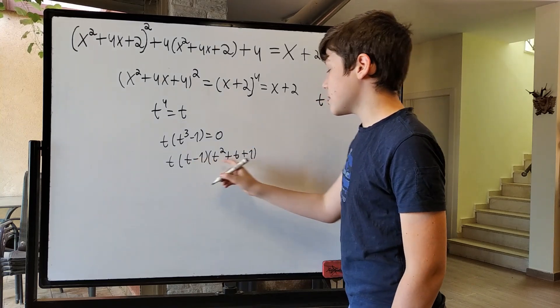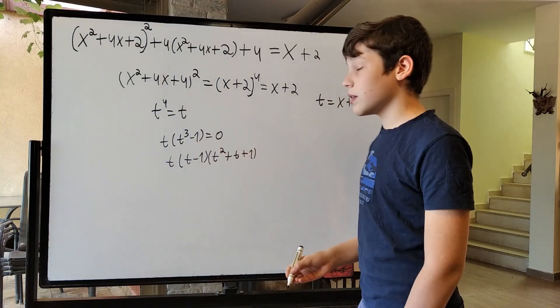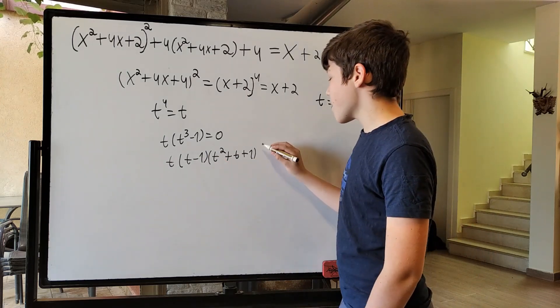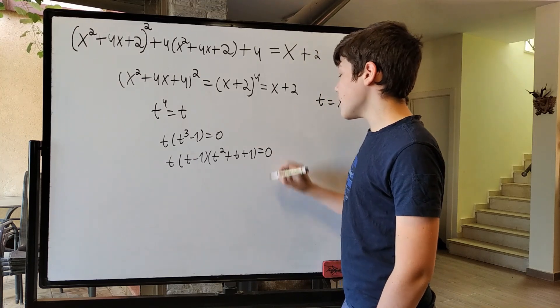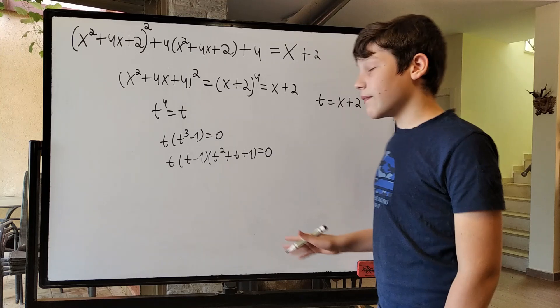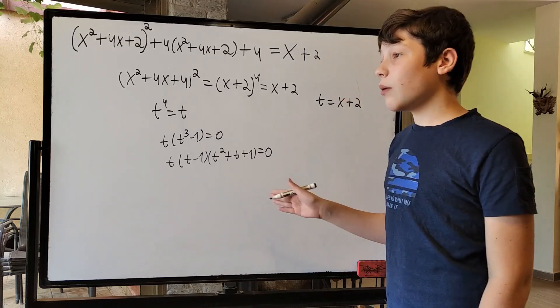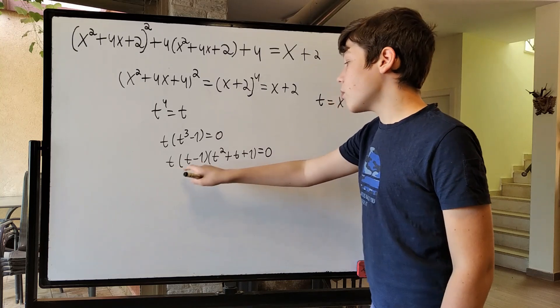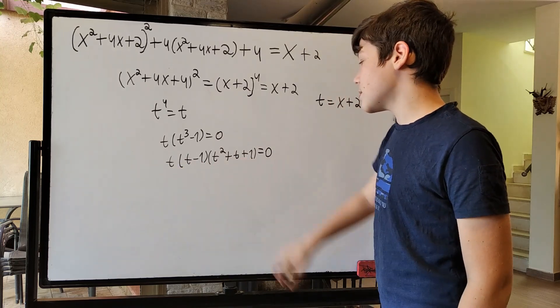So, this times this is t cubed minus 1. You can check it, it's not that hard. And that is equal to 0. Now that we have expanded this far, now we can look at all of our options. This is 0, or this is 0, or this is 0.